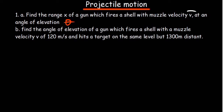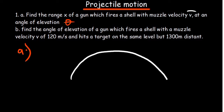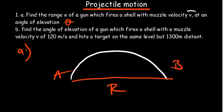Question one: find the range X of a gun which fires a shell with the muzzle velocity V at an angle of elevation theta. What have they told us? We've been told to find the range — that is the horizontal distance covered by the projectile.